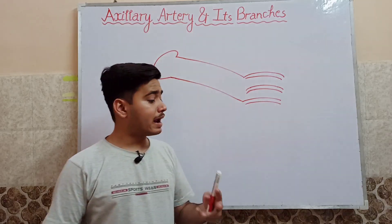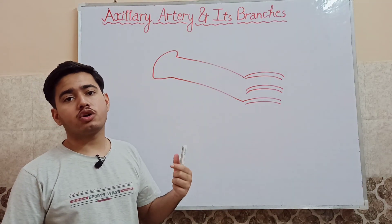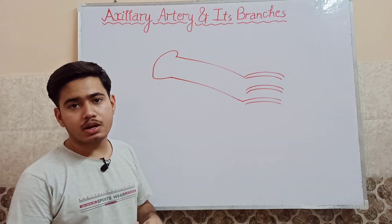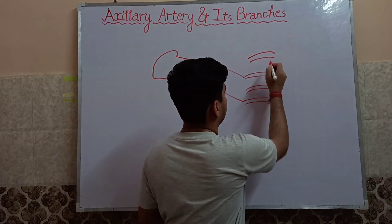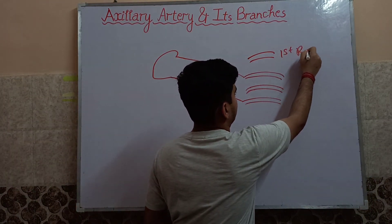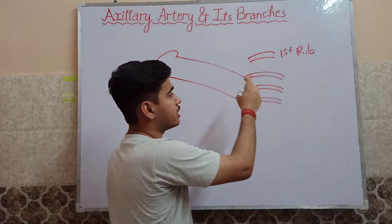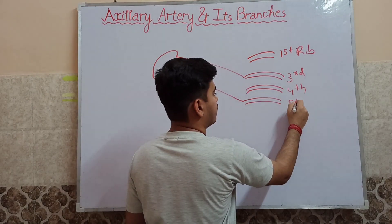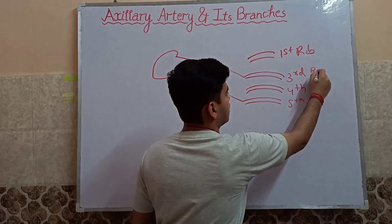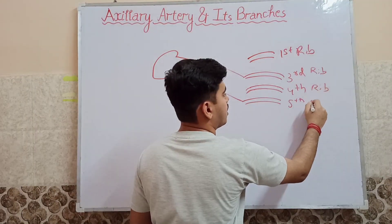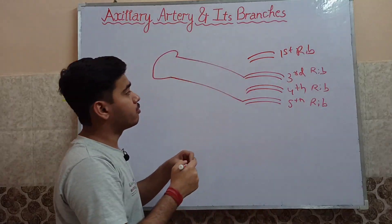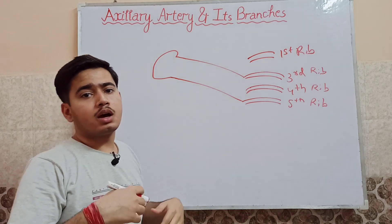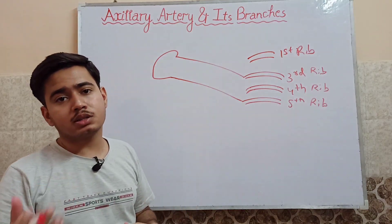The axillary artery extends from the outer or lateral border of the first rib to the lower border of the teres major muscle to continue as the brachial artery. Here you can see — this is our first rib. From its outer and lateral border, it will extend. These are our third, fourth, and fifth ribs. So from the outer or lateral border of the first rib, it will extend to the lower border of the teres major muscle to continue as the brachial artery.